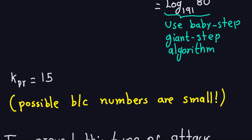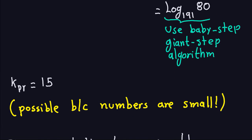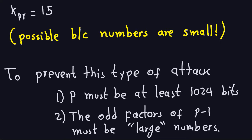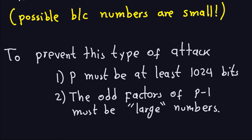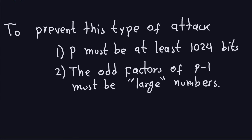This attack works because the numbers are small. Anyone looking at the public parameters could compute the private key. To prevent this, you must choose the prime P of at least 2^1024 bits. Additionally, the odd prime factors of P−1 must be large numbers — if those factors are small, special algorithms can compute discrete logs efficiently, enabling the attack.